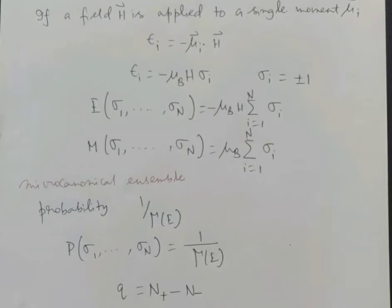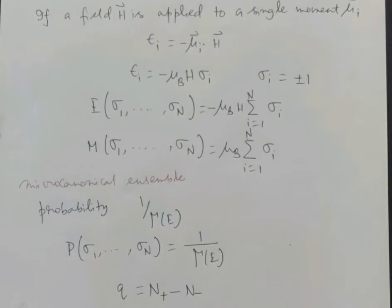This collection of states of constant energy is called a microcanonical ensemble. In such an ensemble, if the energy is E, the probability for a certain microscopic state is simply 1 over tau(E), where tau(E) is the number of states with energy E. For our paramagnet, p as a function of spins sigma_1 to sigma_N equals 1 over tau(E).